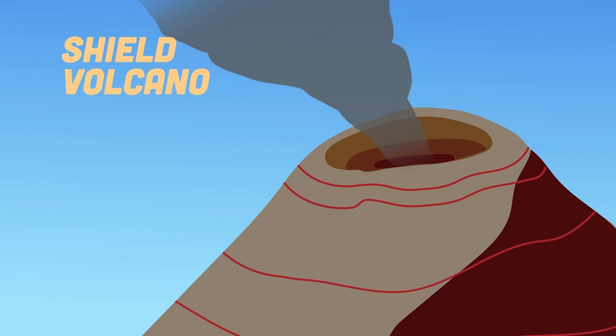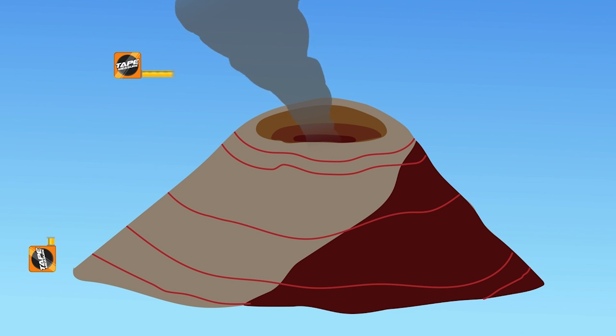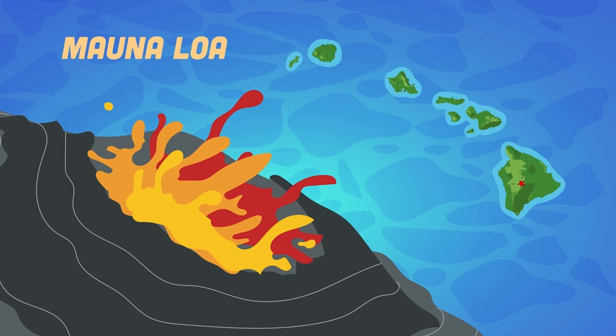Shield volcanoes are built almost entirely of fluid lava flows building gentle slopes, now you see. Lava pours in all directions from a central summit or group of vents, forming a domical shape that looks like a shield from these eruptive events. These shield volcanoes are much wider than they are tall. Mauna Loa of Hawaii is one of the most famous of them all.